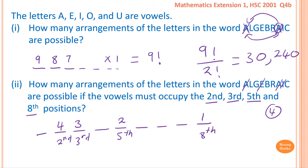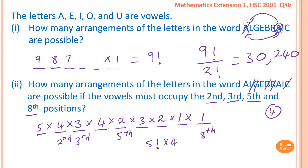For the consonants — there are one, two, three, four, five consonants — we have five choices for the first consonant position, then four, then three, then two, then one. Multiplying all together gives us five factorial times four factorial. But don't forget we have two A's that are the same, so we divide by two factorial. The answer is one thousand four hundred and forty.